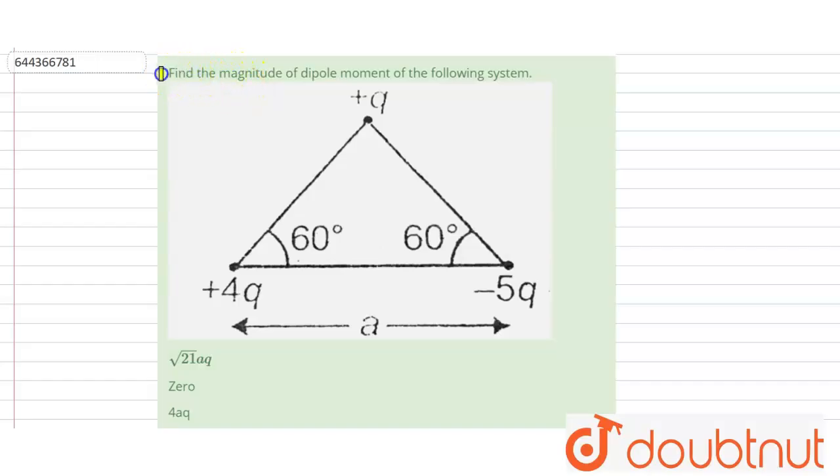The question is find the magnitude of dipole moment of the following system. So the figure is given. So for the calculation, let's separate this minus 5q charge in two parts like this.